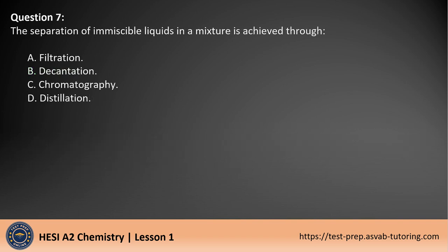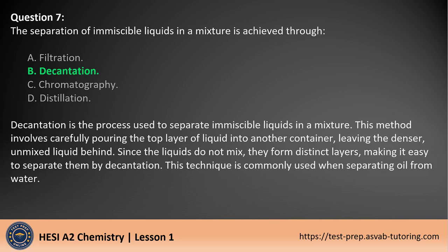Question 7. The separation of immiscible liquids in a mixture is achieved through A. Filtration. B. Decantation. C. Chromatography. D. Distillation. The answer is B. Decantation is the process used to separate immiscible liquids. This method involves carefully pouring the top layer of liquid into another container, leaving the denser, unmixed liquid behind. Since the liquids do not mix, they form distinct layers, making it easy to separate them. This technique is commonly used when separating oil from water.